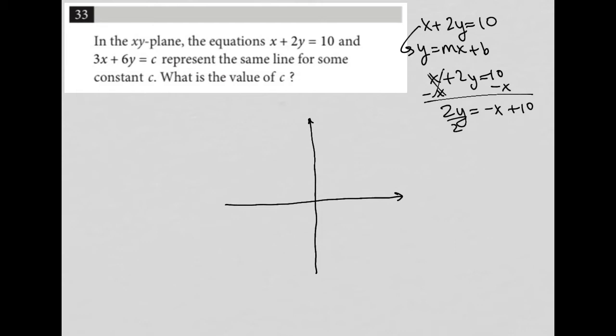I have 2y equals negative x plus 10. I can then divide everything by 2, leaving me with y equals negative, I'm going to call this 1 half x instead of negative x over 2, so I can see the m value clearly defined, and then 10 divided by 2 is 5. So there's my equation for that line, I'm going to even draw it, so 1, 2, 3, 4, 5, that is my y-intercept coming from the b portion here.